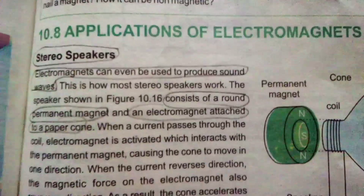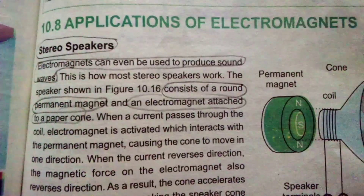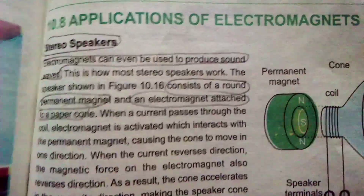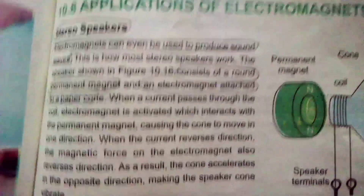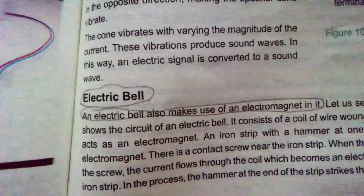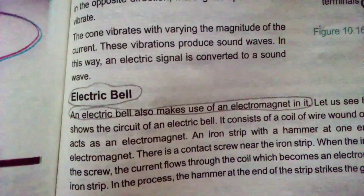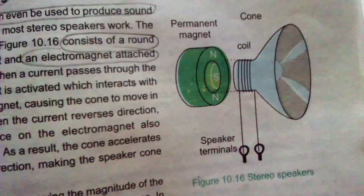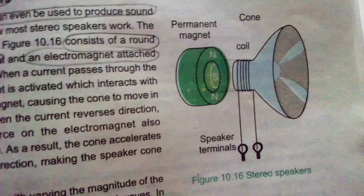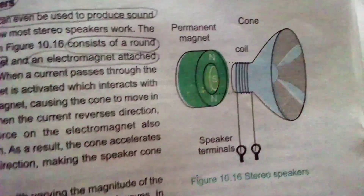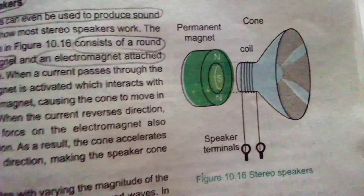In a stereo speaker, an electromagnet can be used to produce sound waves. It consists of a permanent magnet and an electromagnet attached to a paper cone. An electric bell also makes use of an electromagnet.